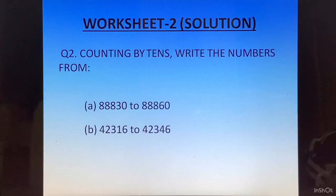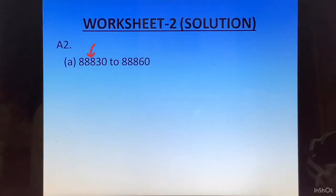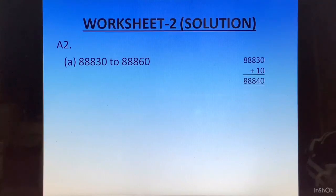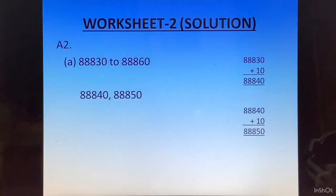Question number 2: counting by 10s. Write the numbers from 88830 to 88860. We take the first number 88830 and add 10 to it to get 88840. Then we take 88840 and add 10 to it again to get 88850, and write the answer like this.